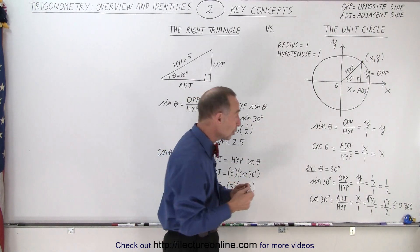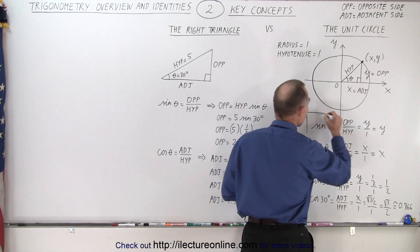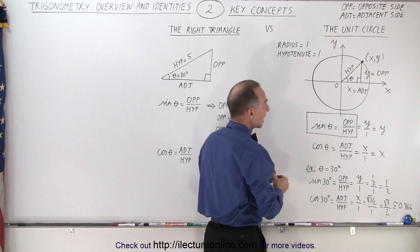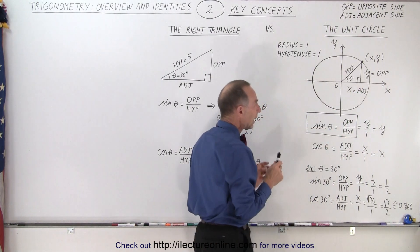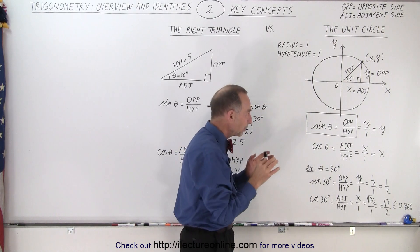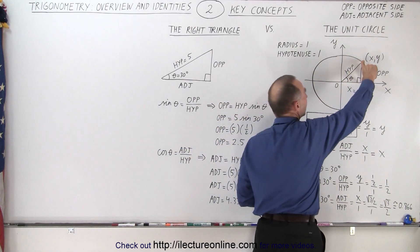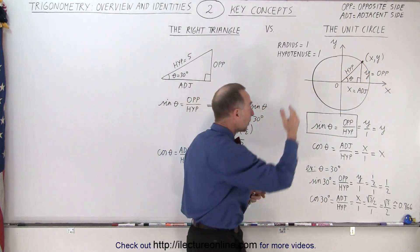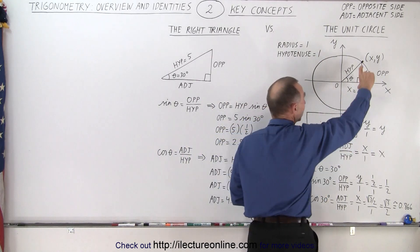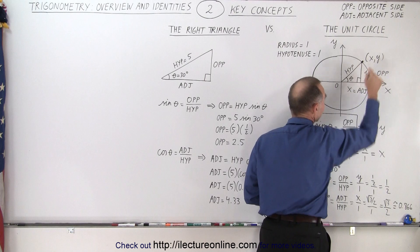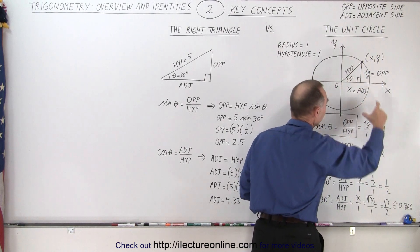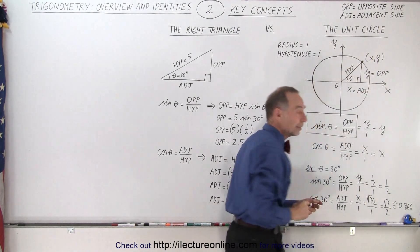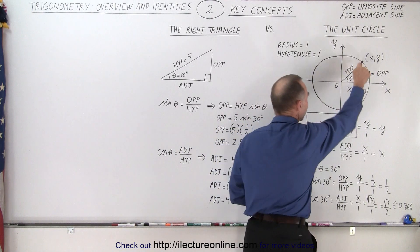By definition — and this is really key to understanding — the sine of the angle theta, where theta is the angle between the horizontal line and the hypotenuse, is simply the ratio of the length of the opposite side to the length of the hypotenuse. With the unit circle, the hypotenuse is always equal to 1, so it's going to be the length of the opposite side y divided by 1, which is simply y. So the length of the opposite side equals the sine of theta in a unit circle.